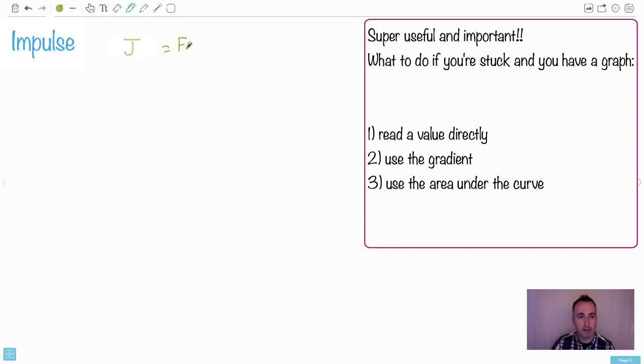Impulse equals, how does it go? It goes F delta T equals, is it M delta V or do they give you delta P? I think they just say delta P. You have to know that it's not. Here we go. This is the impulse equation. You get this in your data booklet. Looks just like this.